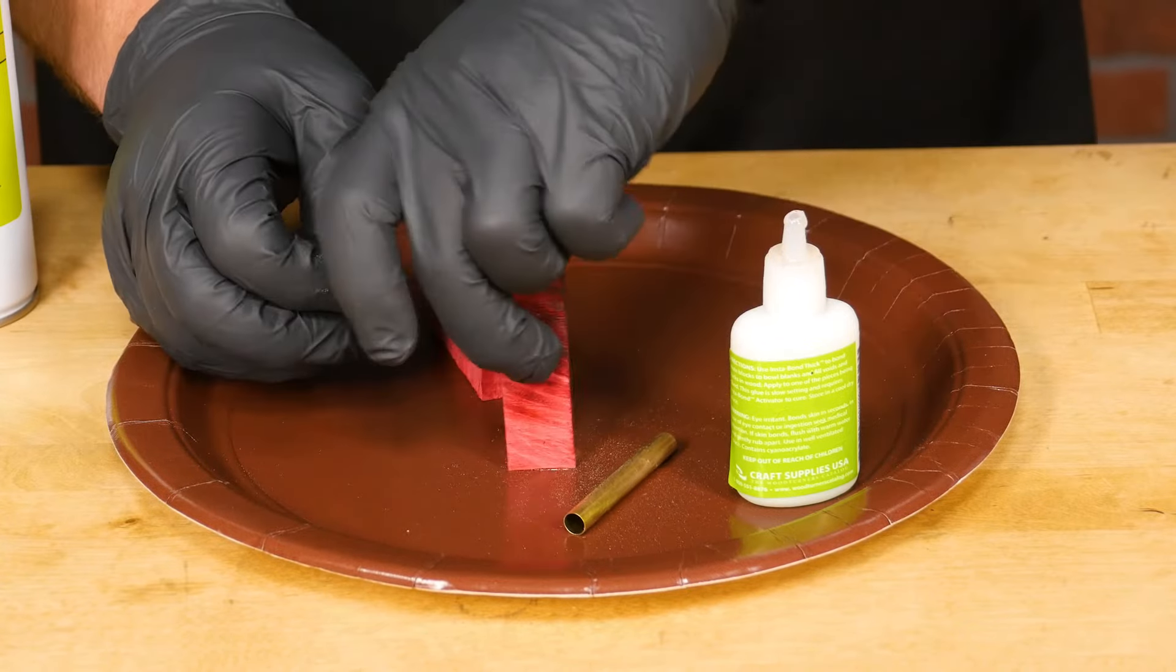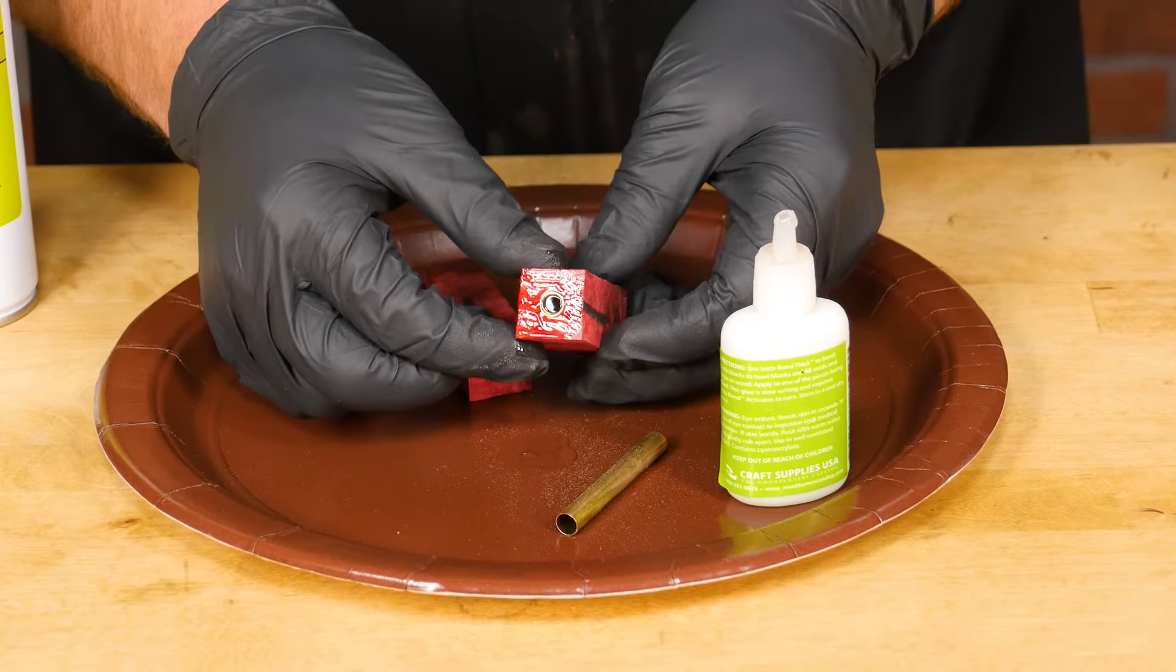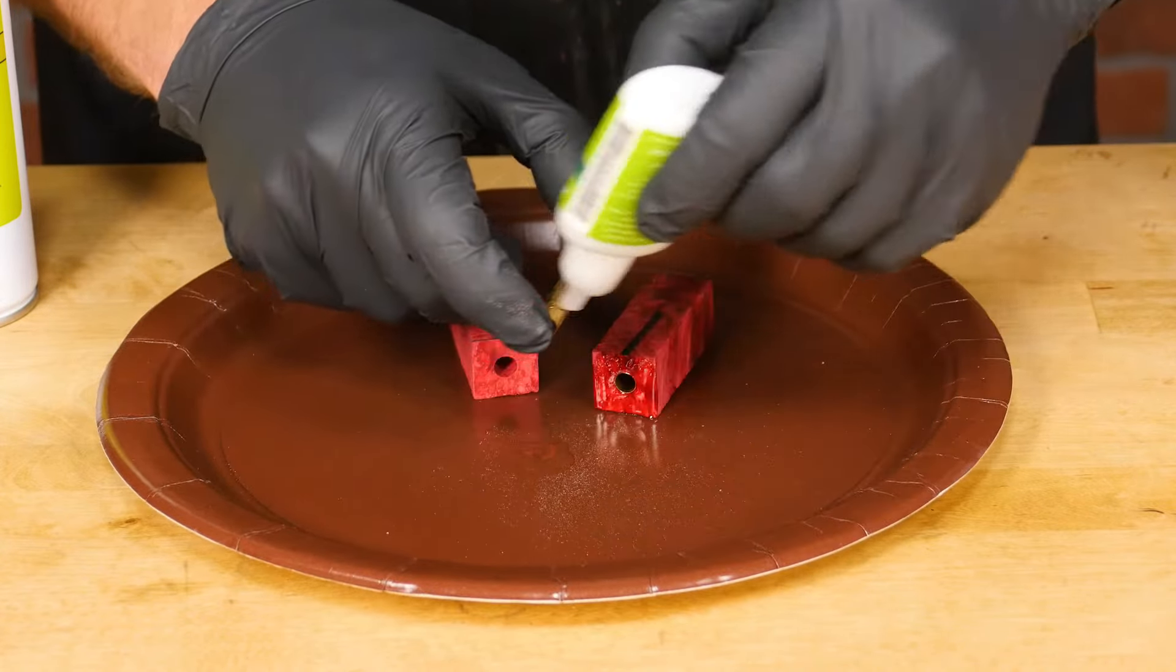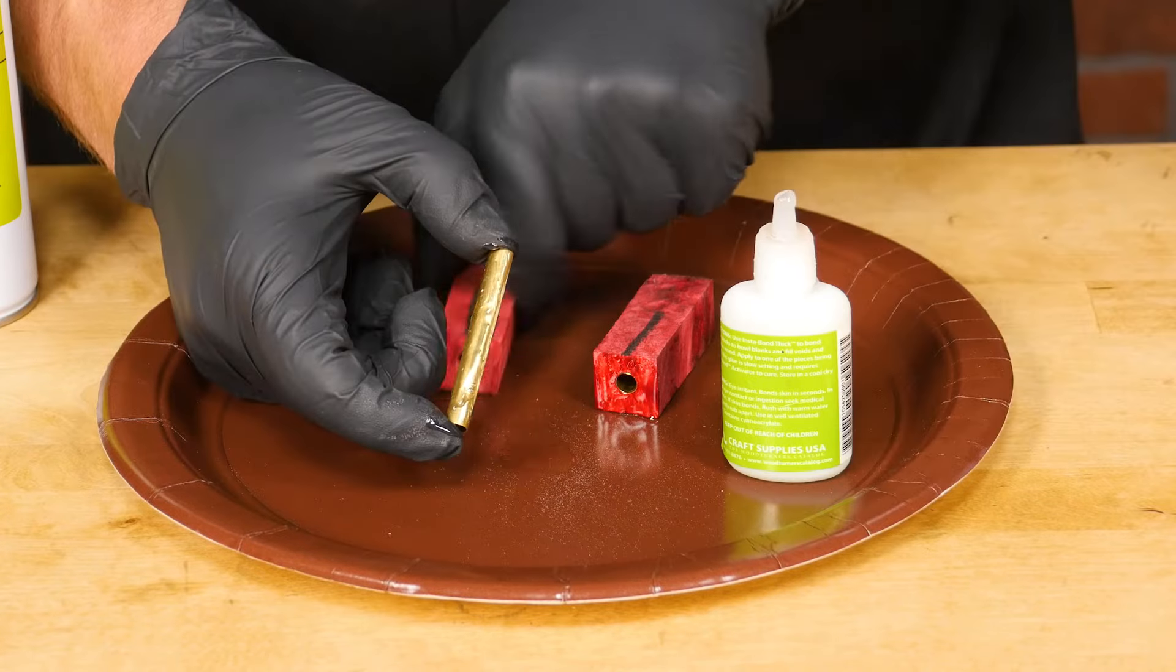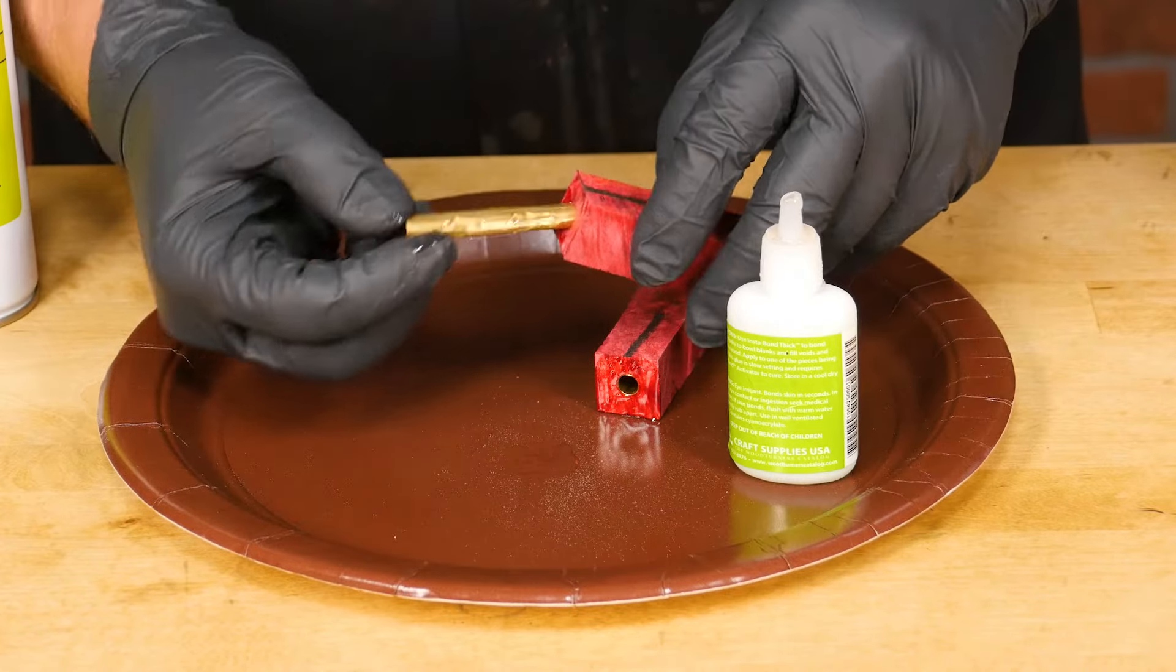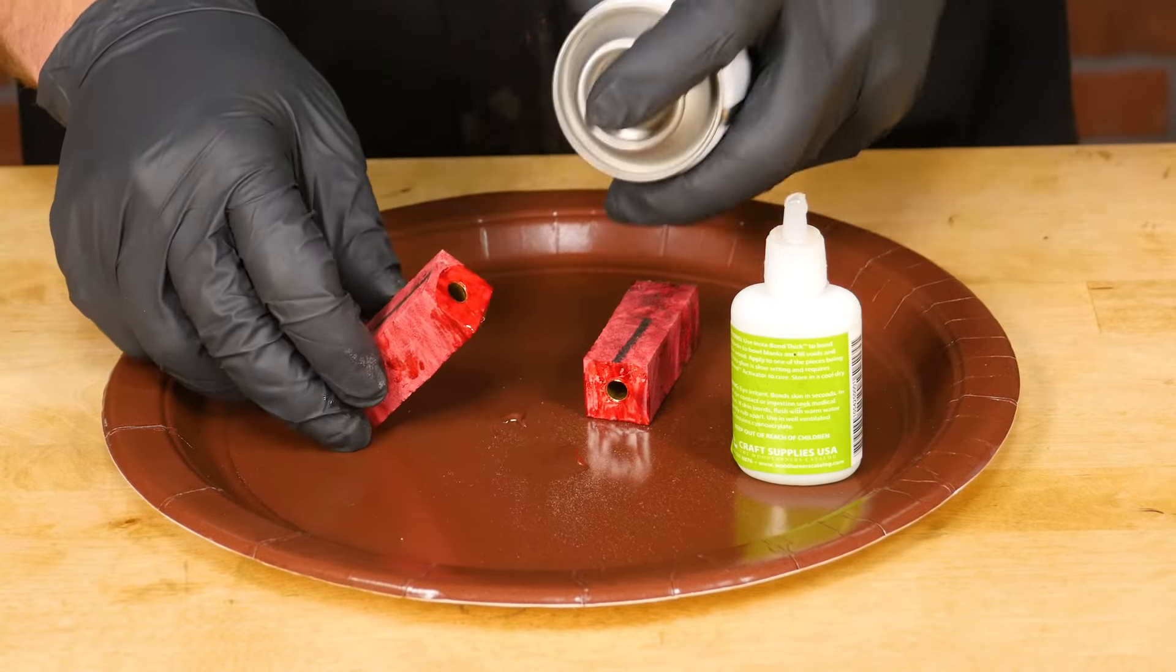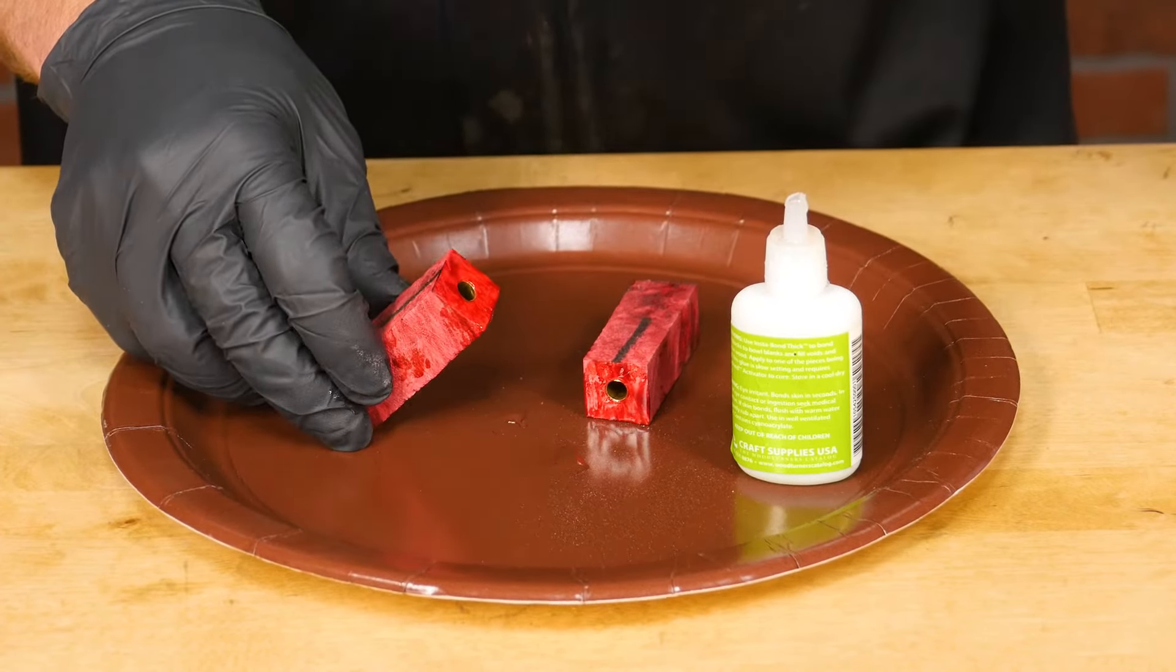Keep going until the tube is just below the surface of the blank, ensuring that the tube is not protruding from either end. Now glue the second blank the exact same way. You can wait a few minutes or spray with an activator to set the glue instantly.